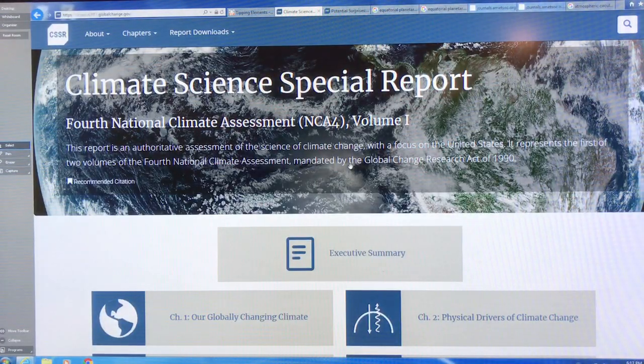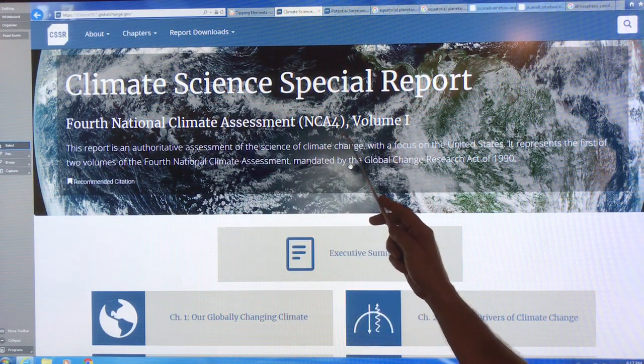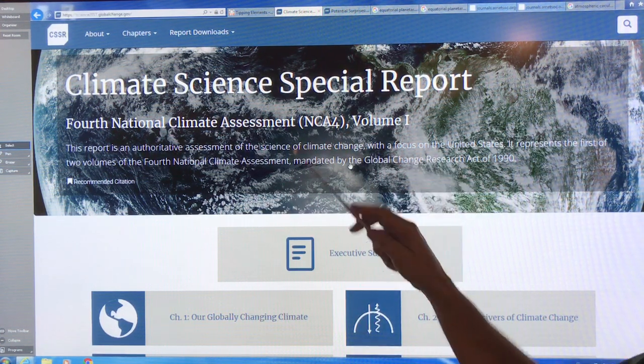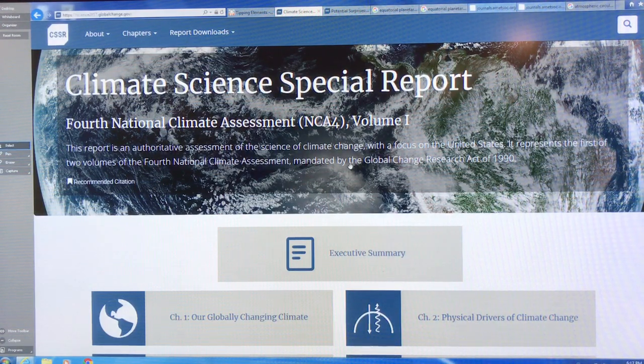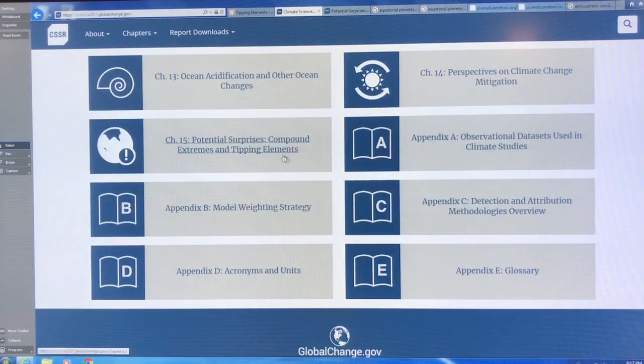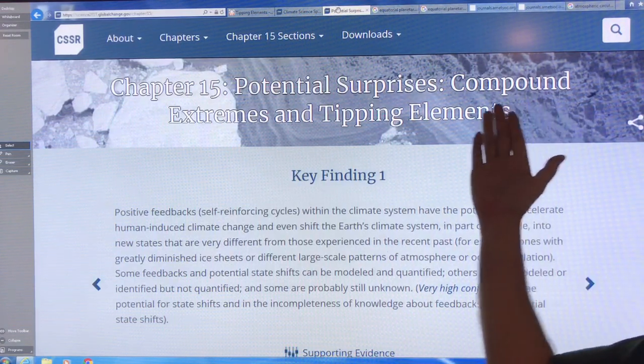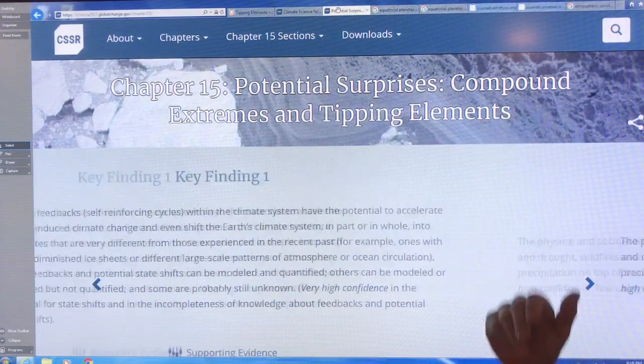Now, the recent climate report that came out, the fourth national climate assessment, volume one, the US report that came out, I talked about it in some previous videos. But in this particular case, I'm going to focus on chapter 15, which are potential surprises, compound extremes and tipping elements. So this is all about tipping points, the risks of them. So here we go, chapter 15. So this is cascading tipping points and tipping elements. So the key findings.